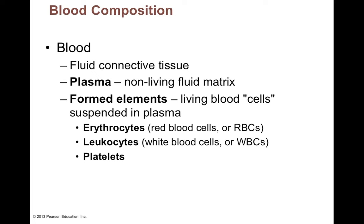Blood is called a connective tissue not just because it has those three elements, but also because it comes from mesenchyme, like all connective tissues do.